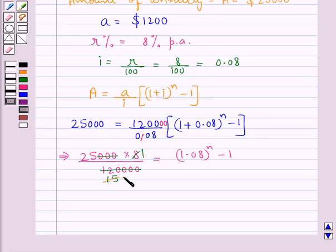And 8, 15 times is 120. Now 5, 3 times is 15 and 5, 5 times is 25. So we have 5 upon 3 is equal to 1.08 to the power of N minus 1.